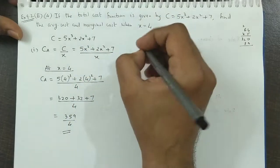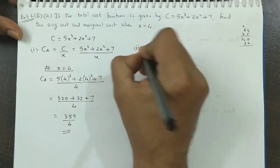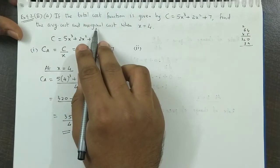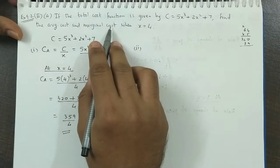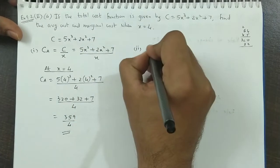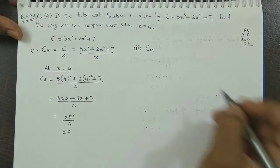Next we have asked marginal cost. Again, marginal word indicates that we have derivative. And which is derivative? Cost. Total cost. Now we denote marginal cost by CM.